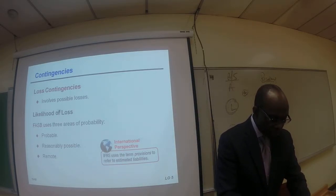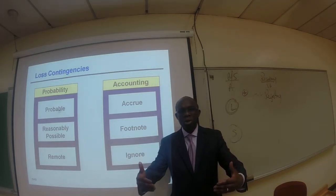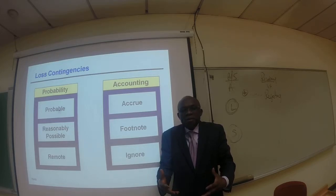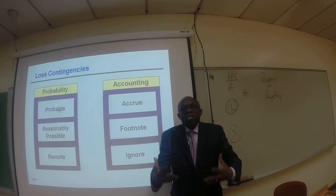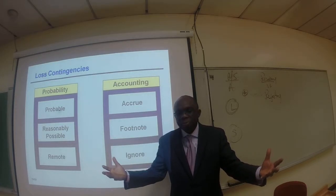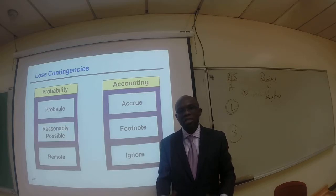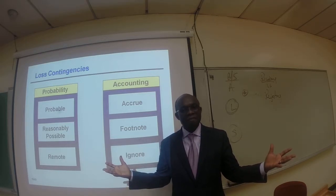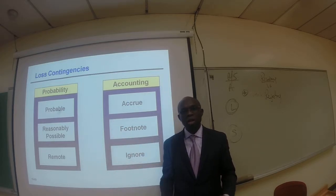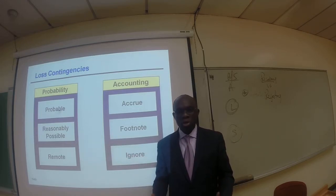What does that mean? If a loss contingency is probable, it means that based on the FASB guidelines and circumstances, it is very likely that we are stuck with this potential loss. For example, if we have a driver who has a history of drinking and we never fired them, and the driver injured people, the evidence is overwhelming — it is very likely that we face a $1 or $2 million litigation. So it is probable that we are going to lose.